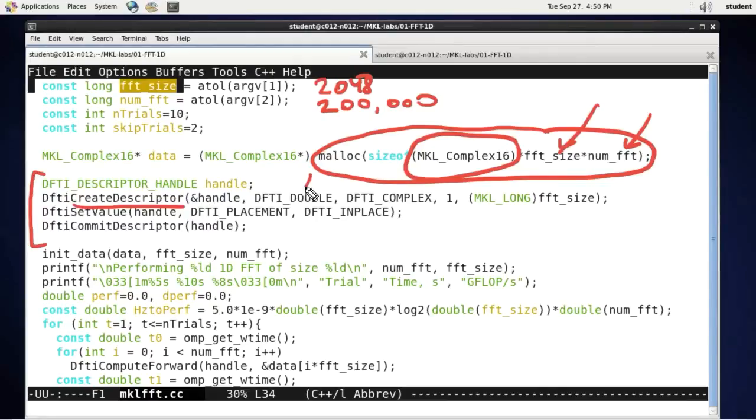Here I initialize the discrete Fourier transform interface. I create a handle, which is a descriptor of the transform. I say that it is going to be a double precision complex-to-complex transform, one transform at a time of this size. And then I also set a parameter that indicates that this transform is going to run in place. I initialize my data.